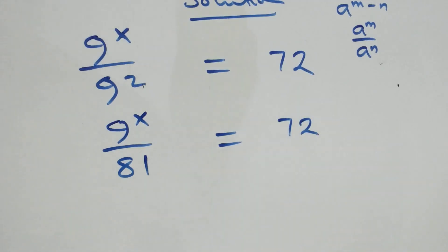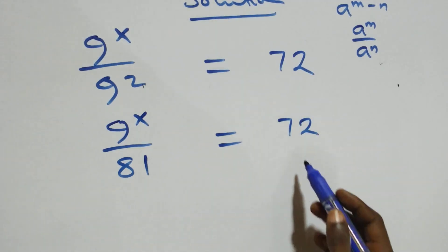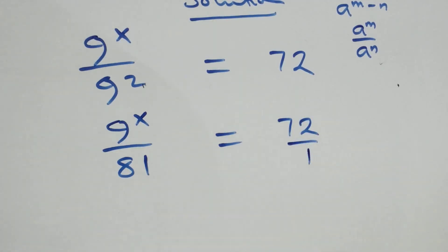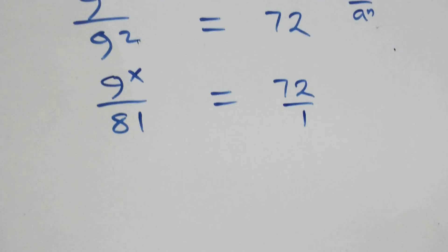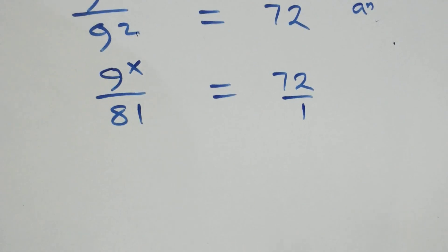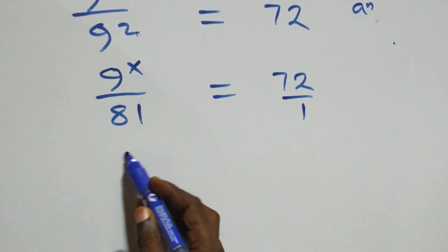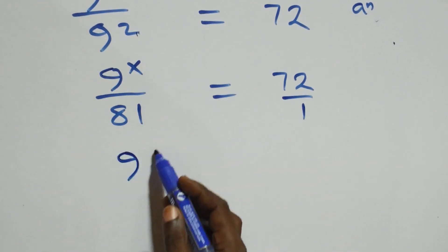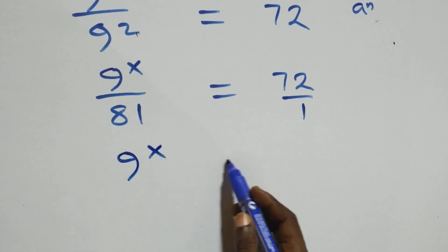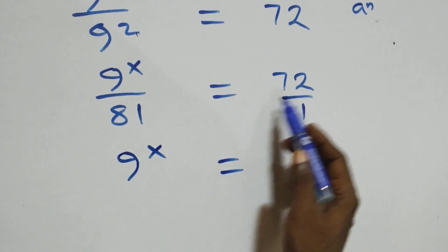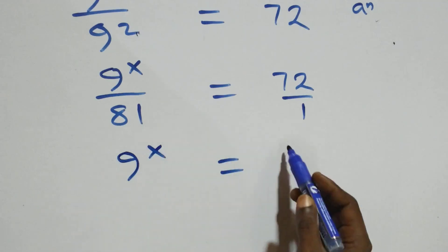This can be written as 72 over 1. We cross-multiply: 9 raised to power x times 1 is the same thing as 9 raised to power x equals 72 times 81.